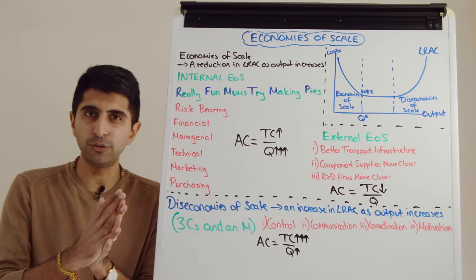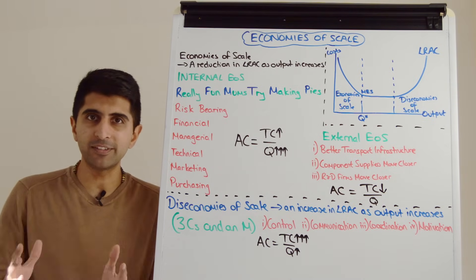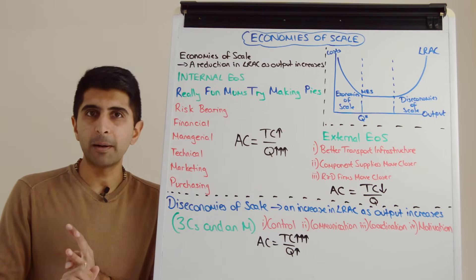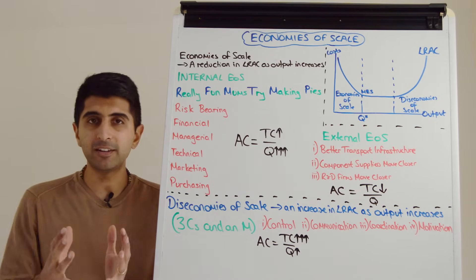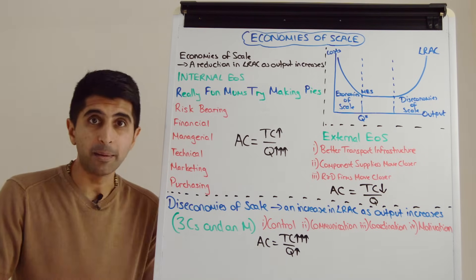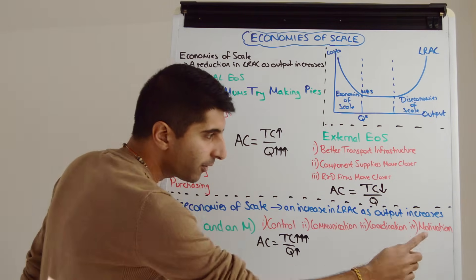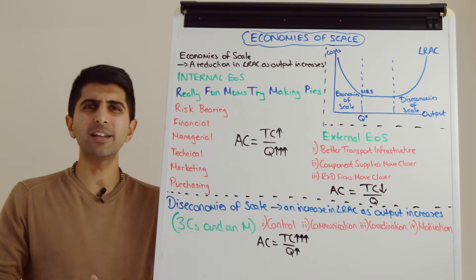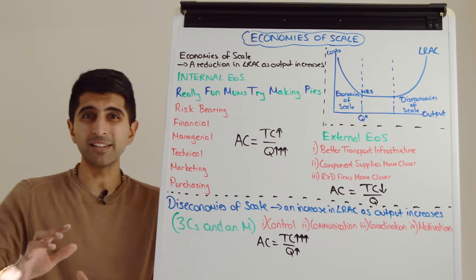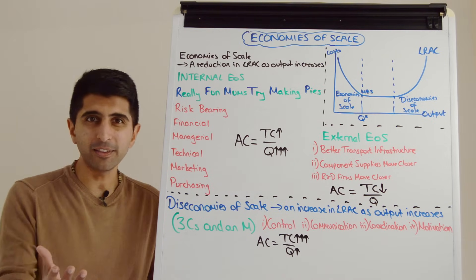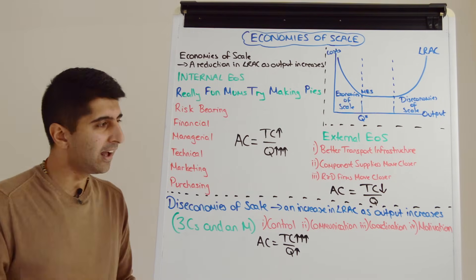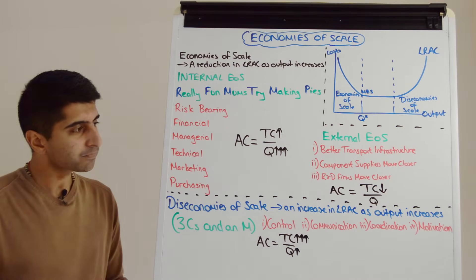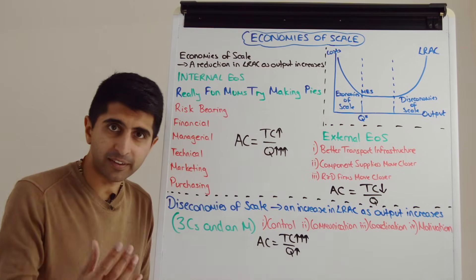With coordination: coordinating different parts of the business becomes much more difficult as you get larger. It's very difficult for purchasing, marketing, HR, and IT departments to coordinate together and ensure they're all working toward the same end goal, so productivity suffers and costs rise faster than quantity. With motivation: as a business gets larger with more and more workers, each individual worker feels less and less valued — like a tiny piece in a very large puzzle who can be easily replaced. That hits their motivation and productivity, meaning costs rise much faster than quantity, pushing up average costs.